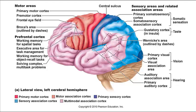The somatosensory association area lies posterior to the primary somatosensory cortex. This region integrates and analyzes somatic sensory inputs along with memories of previous experiences to produce an understanding of what is being felt — for example, allowing you to recognize the cold, flat, round thing in your pocket as a quarter.